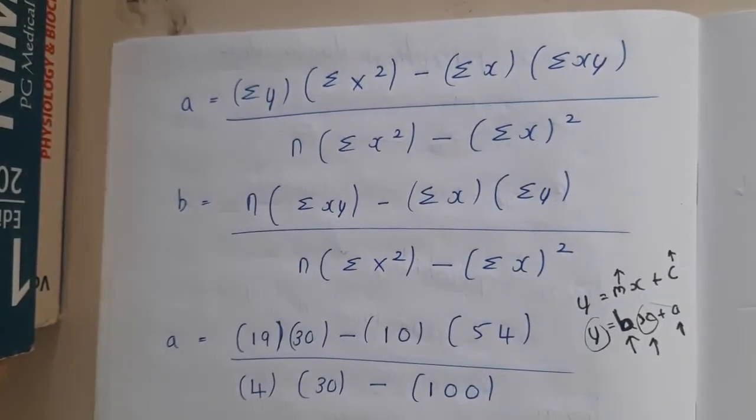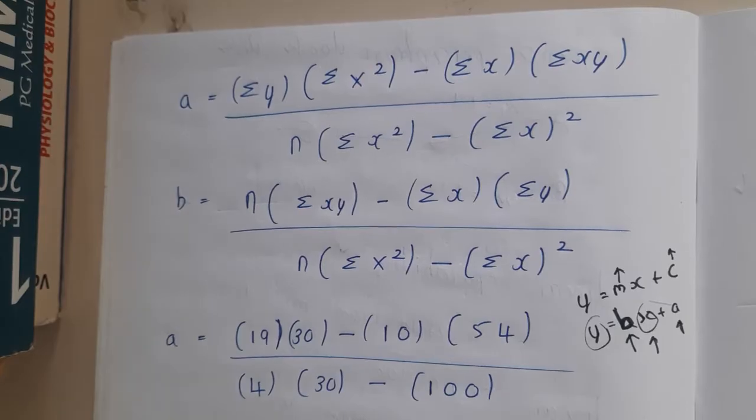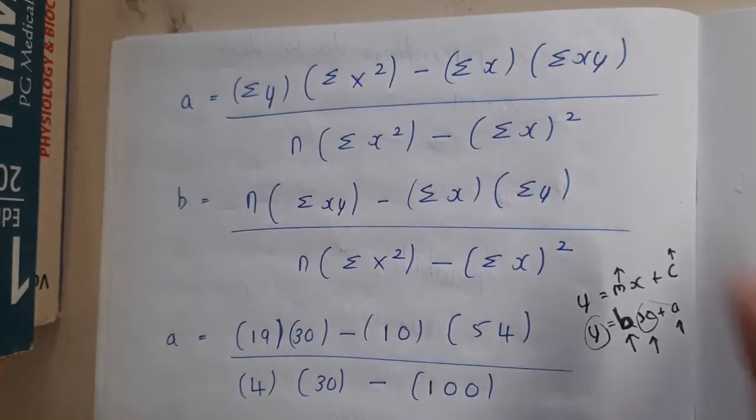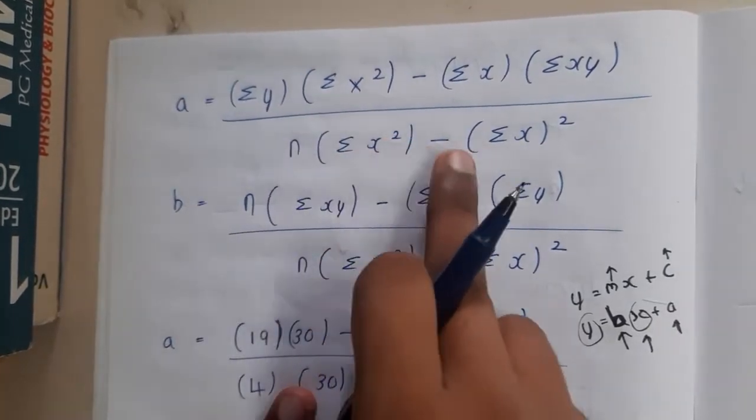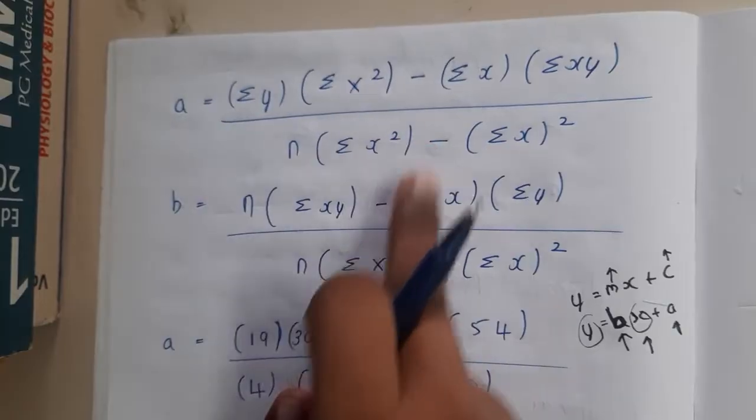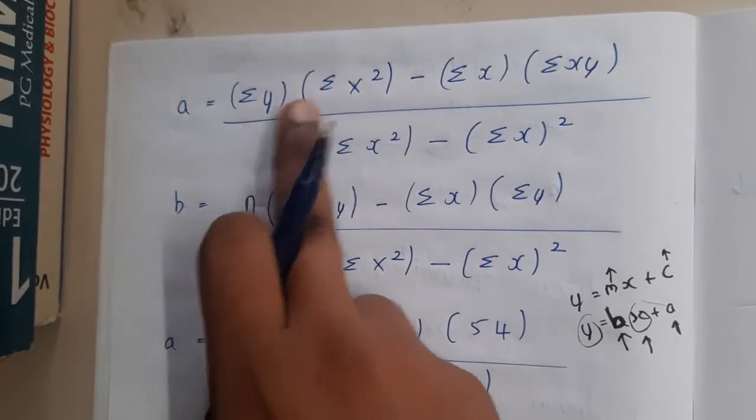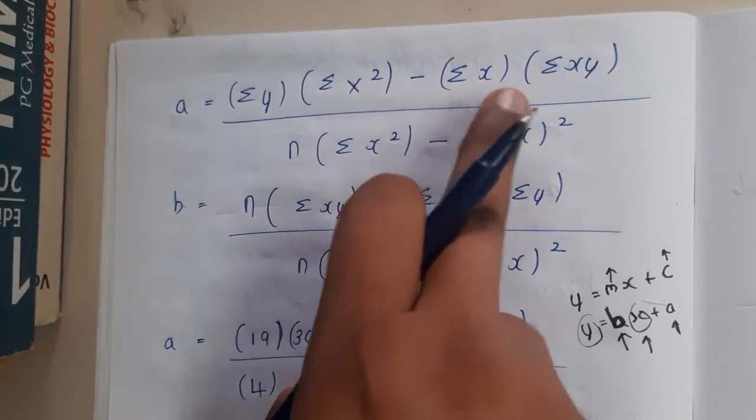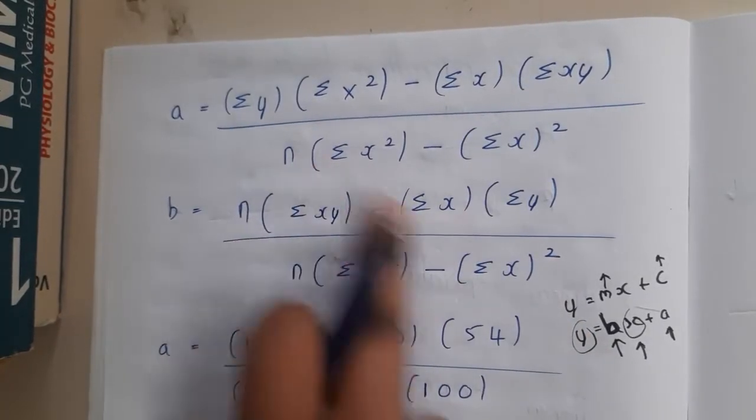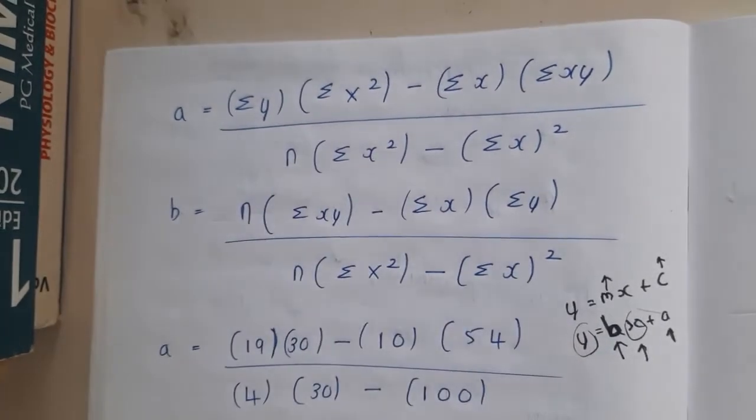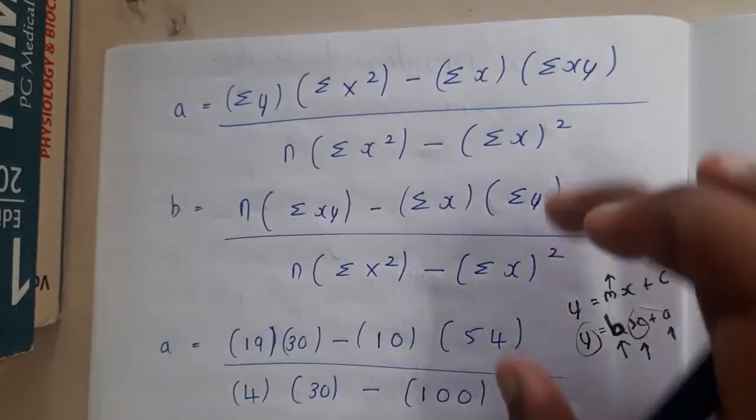Summation of x whole square and sigma x square summation - both are completely different, don't get confused with them. When I was trying the first time I was also a bit confused like why is this formula like this. Please remember it somehow. n into sigma x square minus sigma x whole square - that's the denominator in both of them. Here sigma y into sigma x square minus sigma x into sigma xy. Similarly for b, here it came n into sigma xy minus sigma x into sigma y.